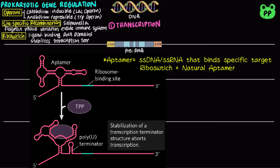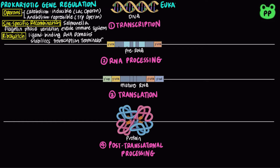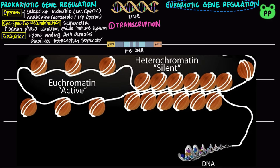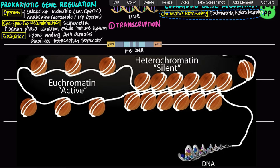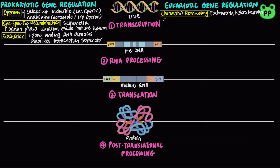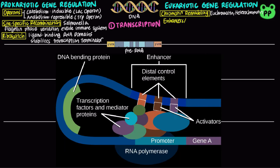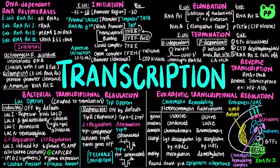Riboswitch RNA also functions in translational regulation, which will be talked about in a moment. On the other hand, eukaryotic transcription is regulated by chromatin remodeling, which changes the structure of chromatin to switch between the inactive condensed heterochromatin and the active loose euchromatin. Most eukaryotic promoters are also positively regulated by enhancers for higher eukaryotes and UAS, which stands for upstream activator sequences in yeast. More details about operons, chromatin remodeling, and the enhancer/UAS system have been covered in my video on transcription.